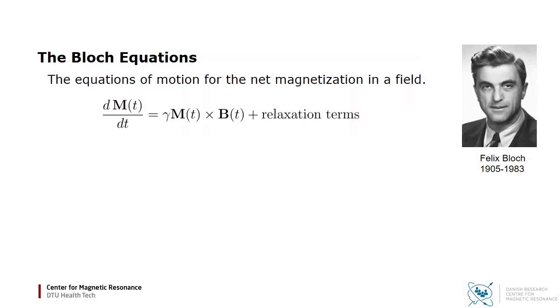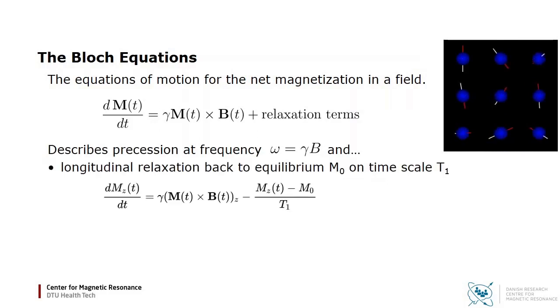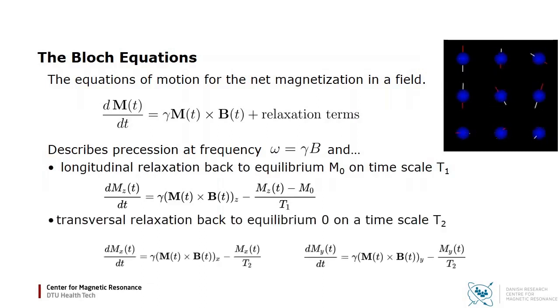The equation of motion for the total magnetization was derived under an assumption of all nuclei experiencing the same magnetic field. However, due to nuclear interactions, that is not the case. The nuclei interact magnetically, and the dipolar coupling causes both dephasing and random changes in the excitation angle. Hence, we end up with the Bloch equations describing precession at the Larmor frequency proportional to the field strength, and on a longer timescale there is longitudinal relaxation back towards equilibrium M0 on a timescale T1, and transversal relaxation back to a different equilibrium 0 on a timescale T2.